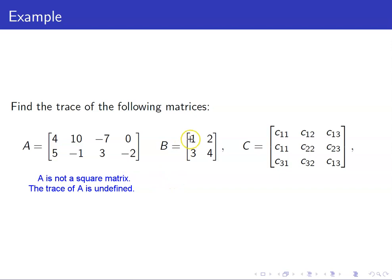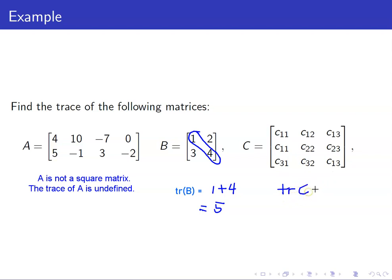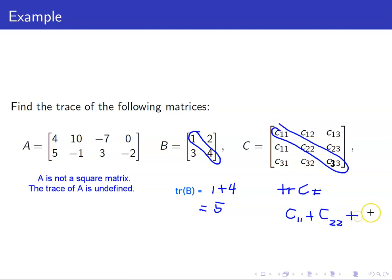For B, this is a square 2 by 2 matrix. So the trace of B is the sum of 1 plus 4, which equals 5. Next, the trace of C — C is a 3 by 3 matrix. The trace of C is equal to C11 plus C22 plus C33. In our next lesson, we are going to discuss the properties of these matrix operations.